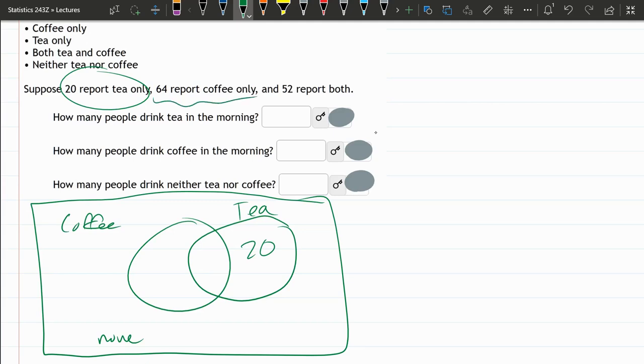64 coffee only. So again, that's not the full coffee circle because we don't count coffee and tea. Coffee only, 64.